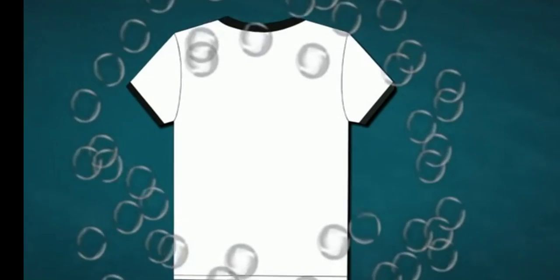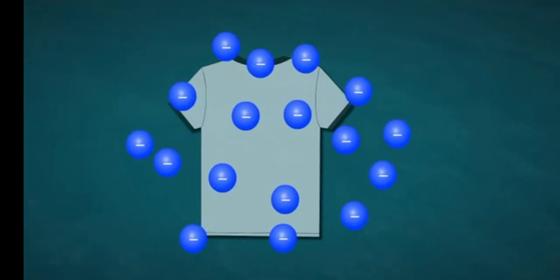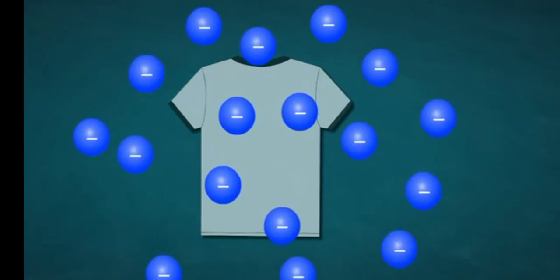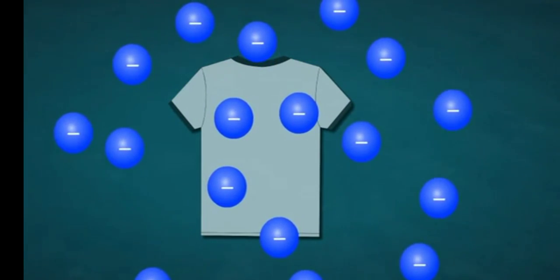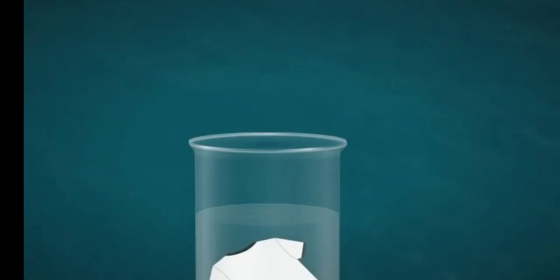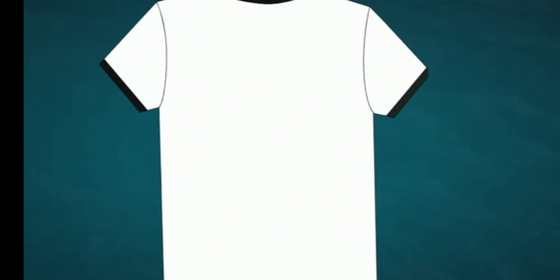The negatively charged sheath around the globules prevents them from coming together and form aggregates. These small droplets get dispersed in water-forming emulsion. The hand rubbing or the agitation due to the washing machine causes dispersion of the oil or grease throughout the soapy water.